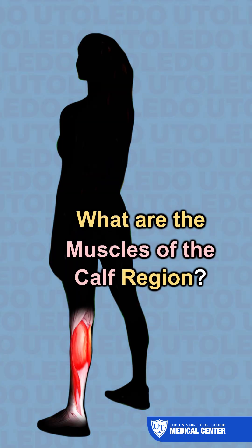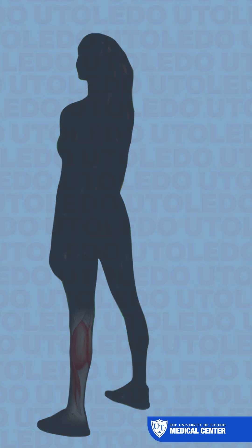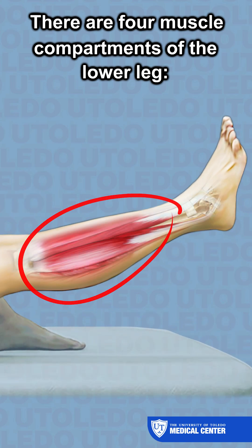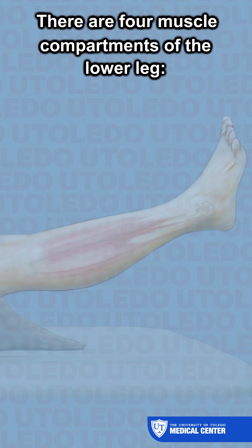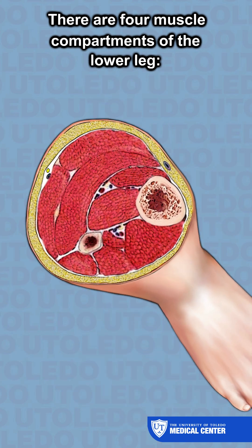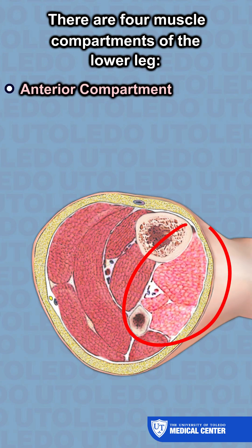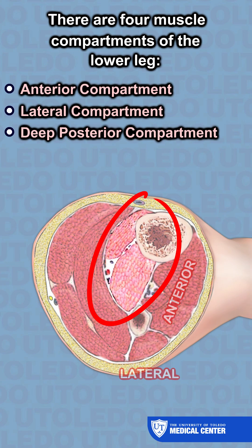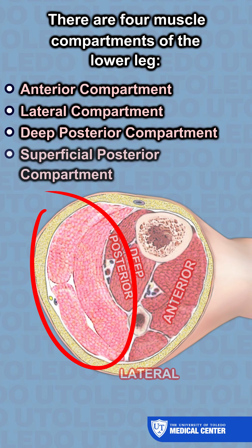What are the muscles located in the calf region of the lower leg? There are four muscle compartments of the lower leg: the anterior compartment, the lateral compartment, the deep posterior compartment, and the superficial posterior compartment.